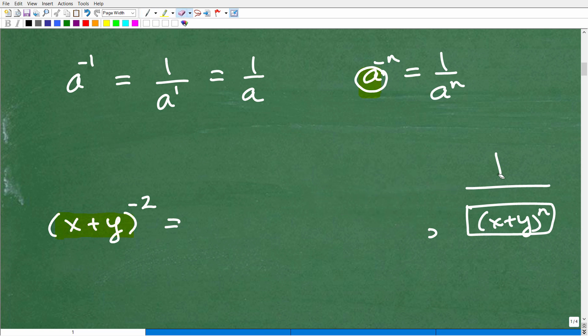So first things first, recognize that this is, you're going to treat this as the base, a. So this is going to be equal to 1 over x plus y squared, okay?